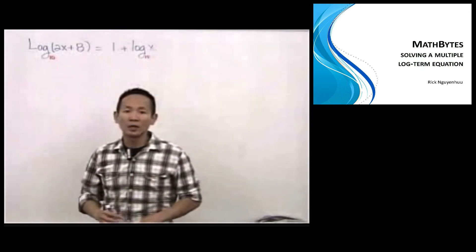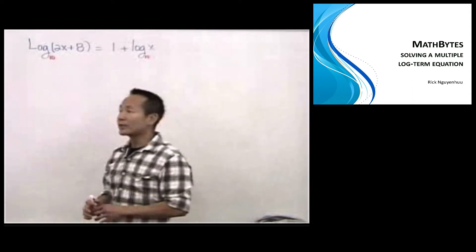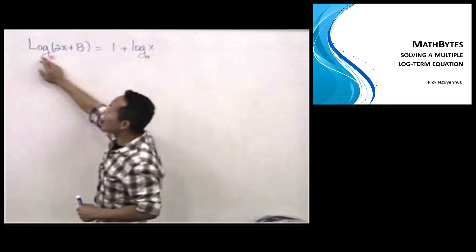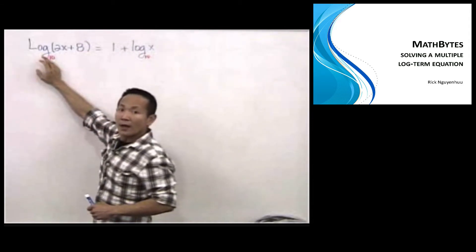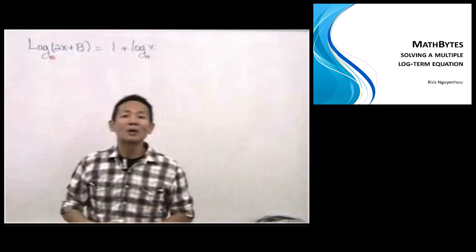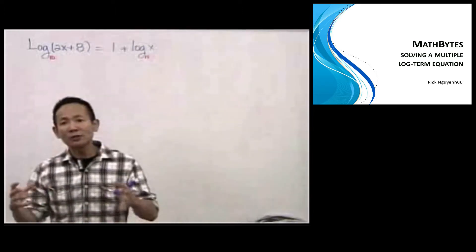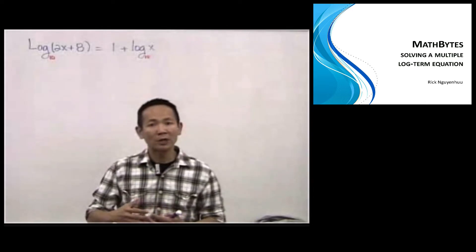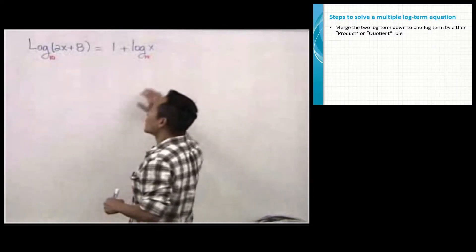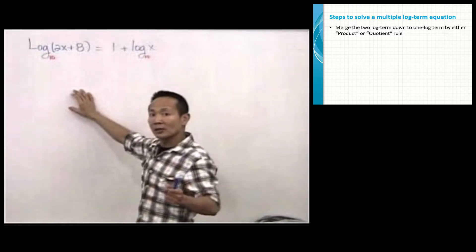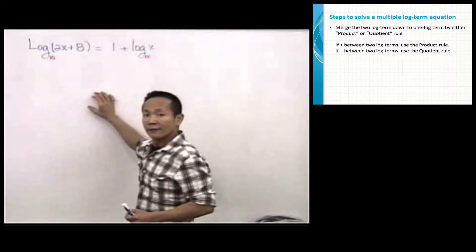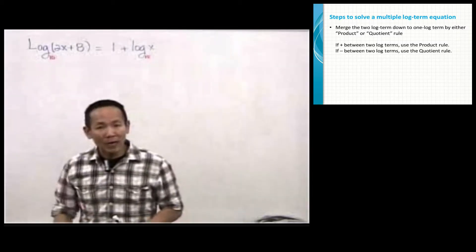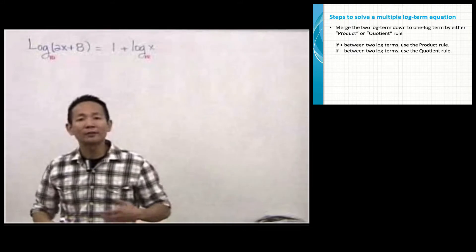If you want to solve a log equation where x is inside the quantity attached to the log, the whole idea is gathering all the log terms to one side of the equation. As long as you have two log terms, you can narrow down to one log term by merging them. If you have addition between two log terms, you merge by the product rule. If you have subtraction between two log terms, you merge by the quotient rule.